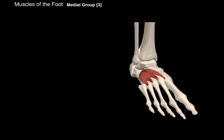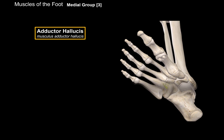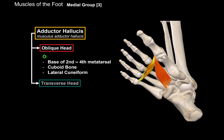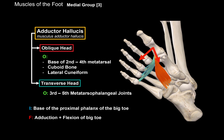Now let's look at the medial group of the foot. All of these muscles are innervated by the tibial nerve. The first muscle is the adductor hallucis, which consists of an oblique head — originating at the base of the 2nd to 4th metatarsals, the cuboid bone, and the lateral cuneiform bone — and a transverse head, which originates at the 3rd to 4th metatarsophalangeal joints. Both heads insert at the base of the proximal phalanx of the big toe, and the function is adduction as well as flexion of the big toe.